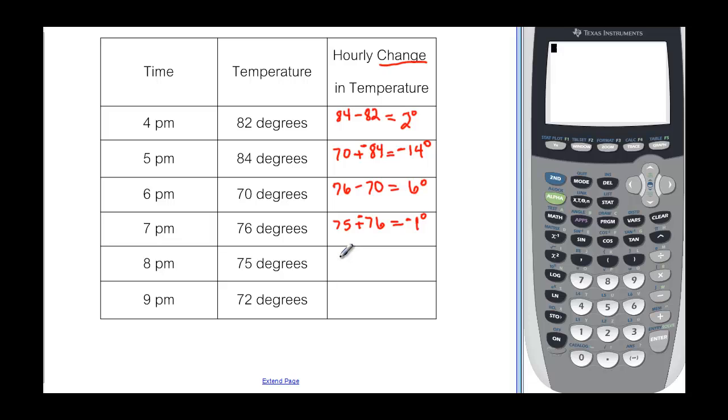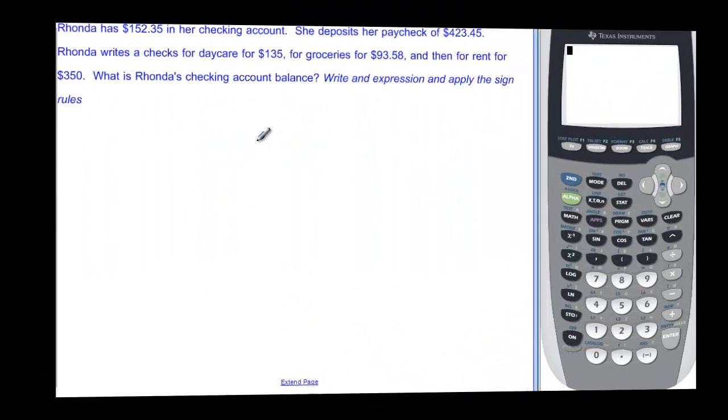From 8 o'clock to 9 o'clock we go from 72 degrees at 9pm but it was 75 degrees so we're going to subtract that from 8 o'clock. And again we're going to add the opposite. The difference between 72 and 75 is three but 75 is larger so it's a negative three degrees. And this final one is not applicable because we don't know what 10 o'clock is. Let's look at this example.